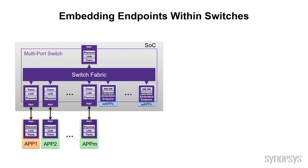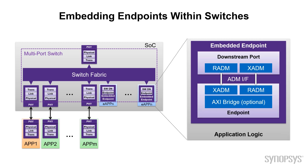On the left, you see an SOC with an embedded switch. I've got some applications that are running externally on their own chips, labeled App1 through AppM. They communicate via an external link via a PHY, so we go through the PCI Express protocol on each of these links, leaving this SOC and talking to these separate applications in their own chips. Then on the right-hand side of the same diagram, you see the embedded endpoints — these two blocks with the blue showing the embedded applications. Essentially, we've eliminated the need for this external PHY and external application, and pulled it right inside the SOC.